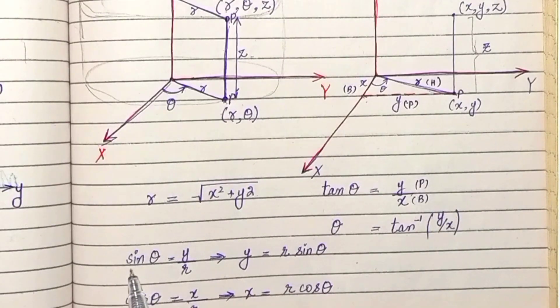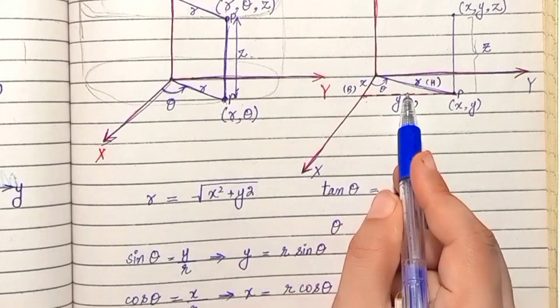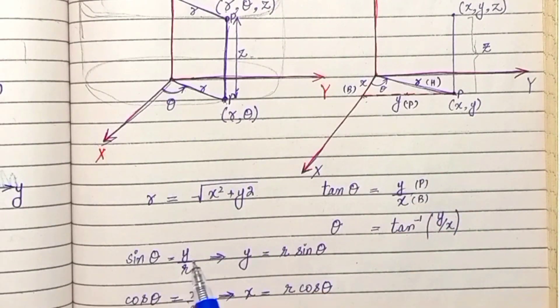y divided by x ke barabar ho jayega. sin theta is triangle mein barabar hoga y divided by r ke, where y is the perpendicular and r is the hypotenuse.